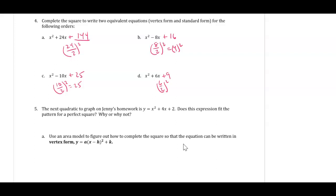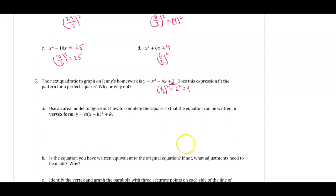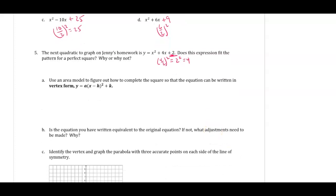So, the next quadratic to graph on Jenny's homework is y equals x squared plus 4x plus 2. Does this expression fit the pattern for a perfect square? Why or why not? Well, if I take half of 4 and square it, I get 2 squared, which is 4. Does that match up with the plus 2? It doesn't. So this function right here is a quadratic, but not a perfect square. You cannot write that as some binomial square.